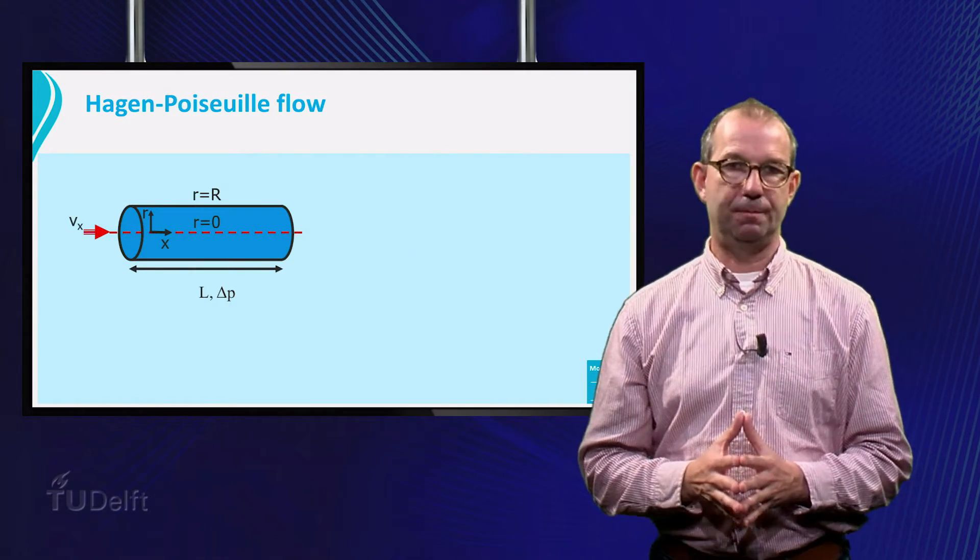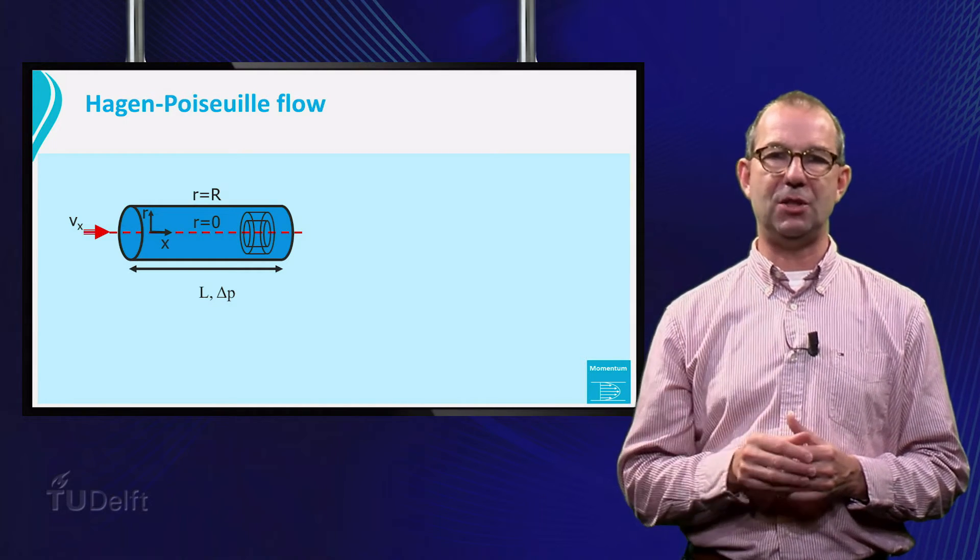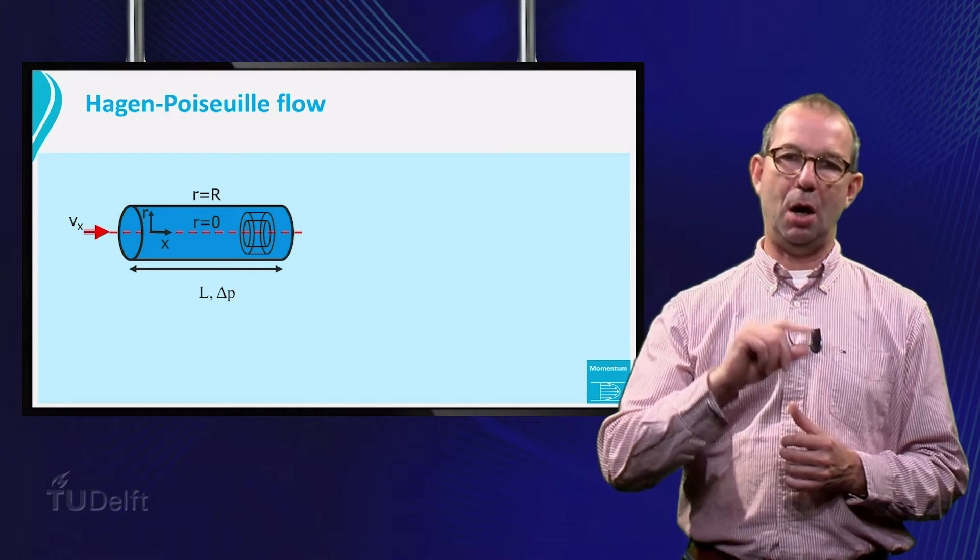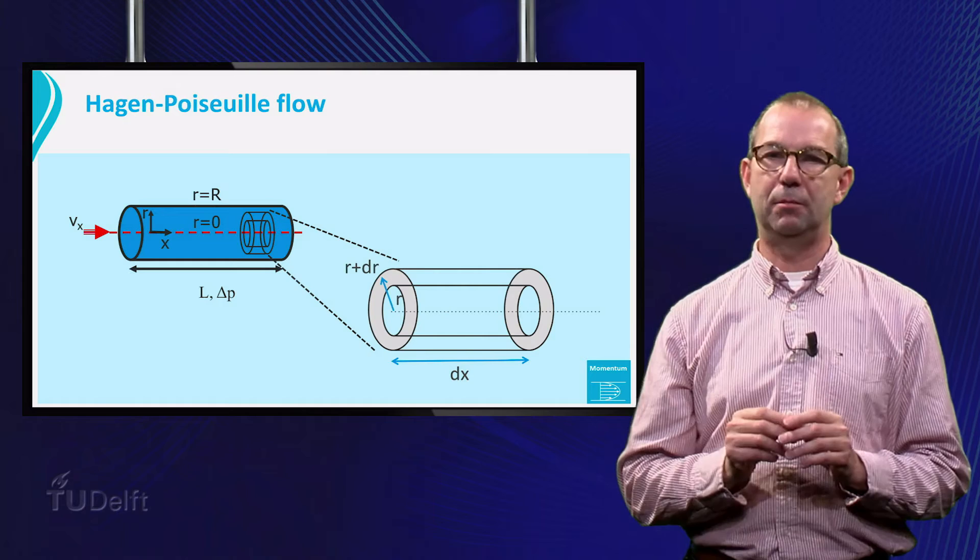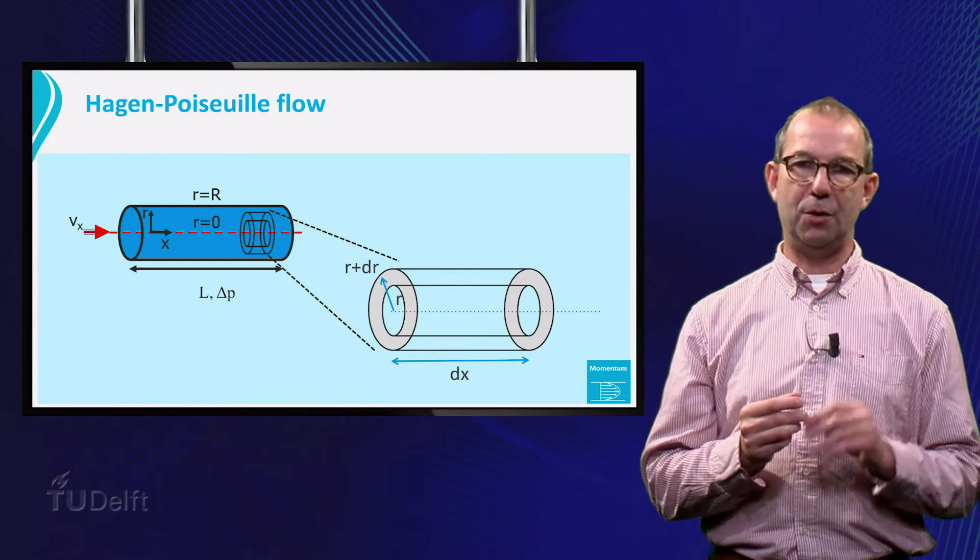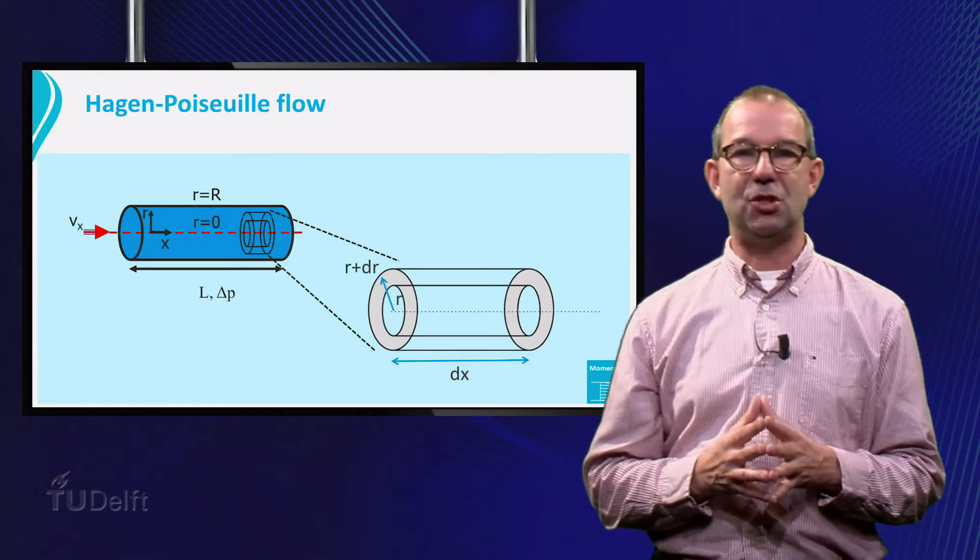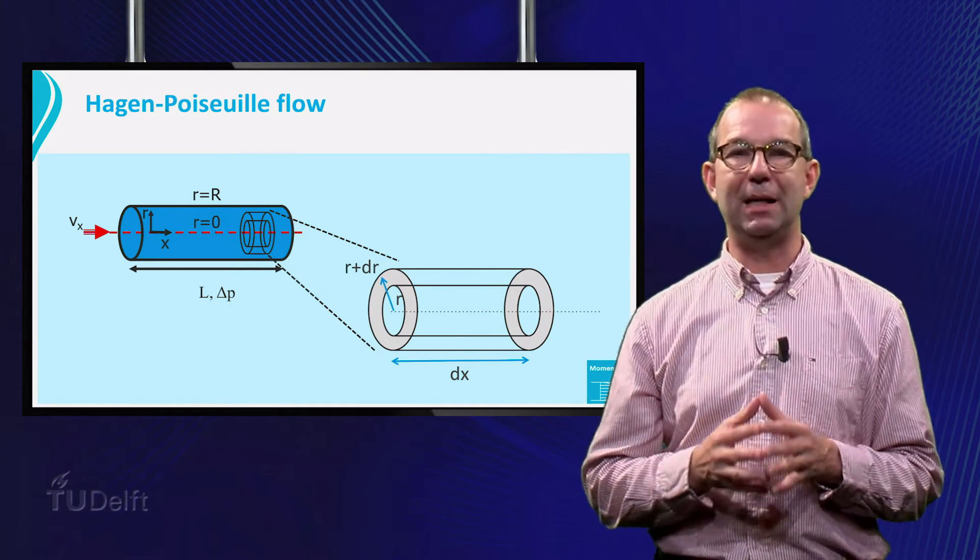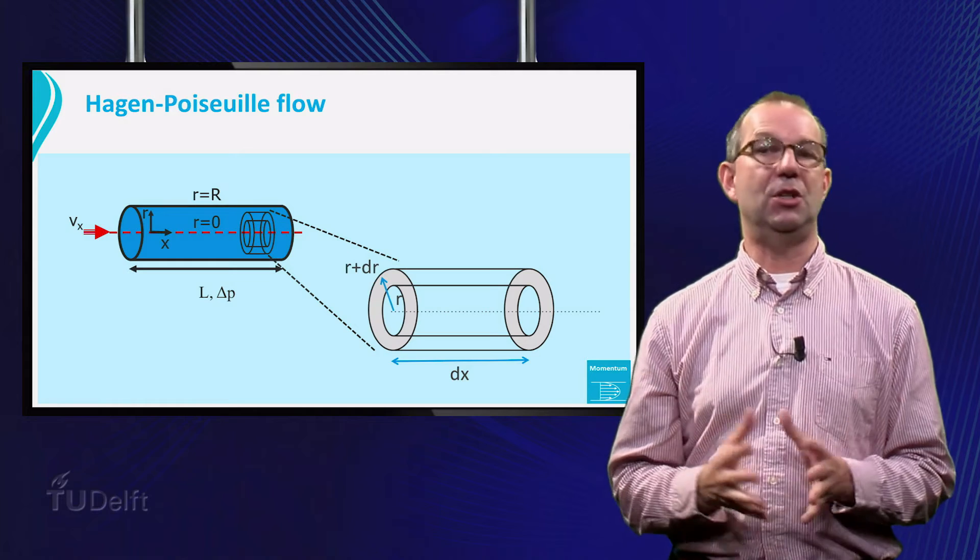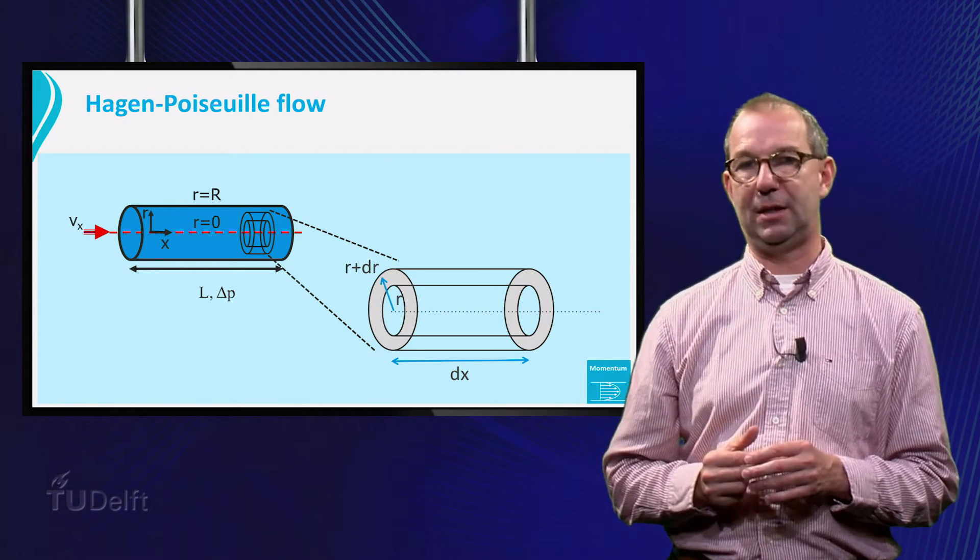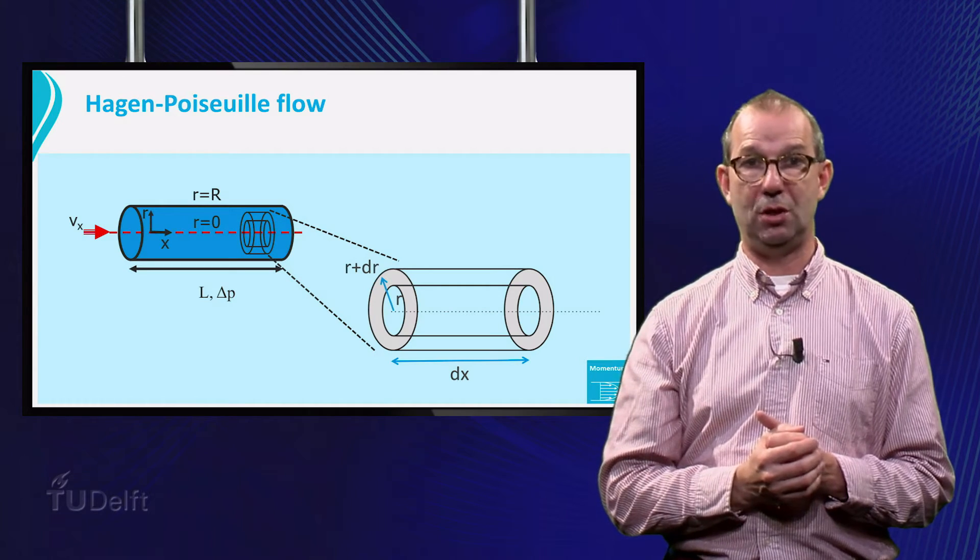We first set up a force balance. A good choice of the control volume is a ring out of the fluid domain with length dx and an inner and outer radius r and r plus dr. This is shown in the figure. If we zoom in, we can see better. The fluid is flowing into the ring through the grey area on the left and out through the grey area on the right. The momentum balance also in this case reduces to a force balance, balancing all forces in the x direction. As gravity is vertically oriented, we can leave this out of the discussion. Two types of forces are acting. Shear stress on the inner and outer surface of the cylindrical ring and pressure forces on the grey parts.